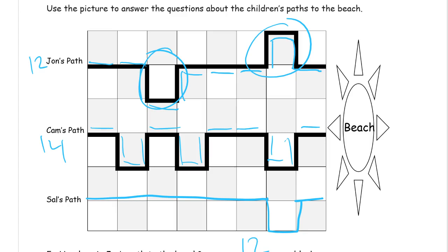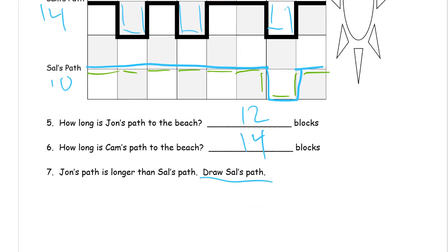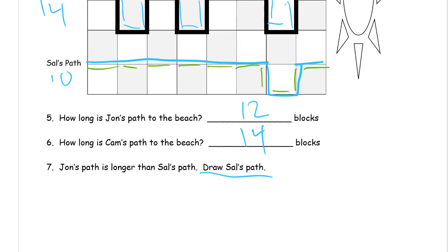We need a different color to count. One, two, three, four, five, six, seven, eight, nine, 10. So 10, it's still shorter. And I just drew Sal's path. And you don't have to write this, but I'm just going to add it for extra. Sal's path is 10 blocks.